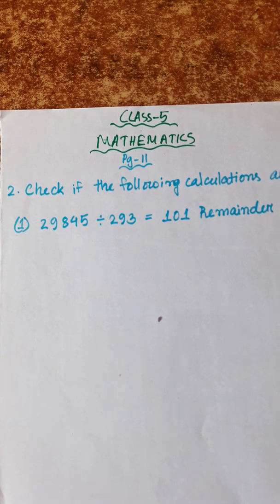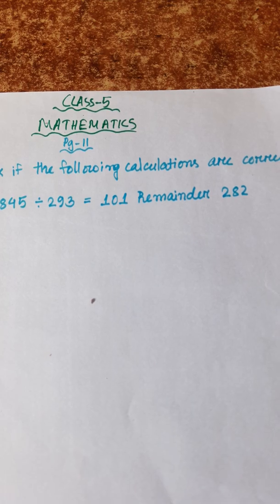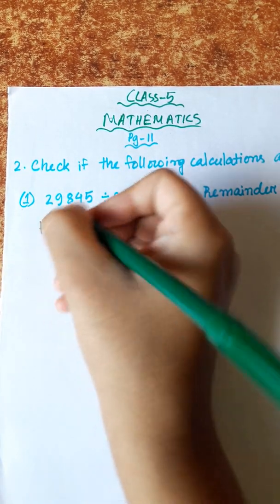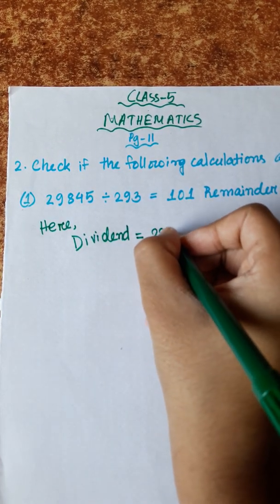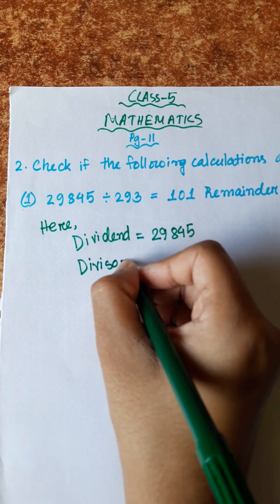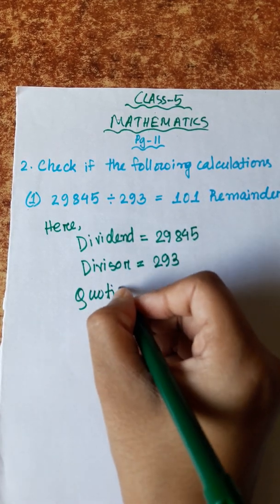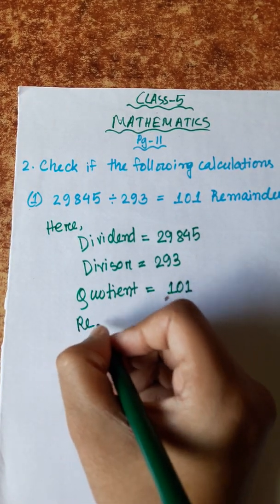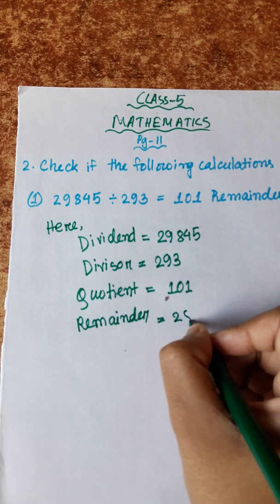Number 1: 29845 divided by 293 is equal to 101 remainder 282. Here, dividend is equal to 29845, divisor is equal to 293, quotient is equal to 101, and remainder is equal to 282.